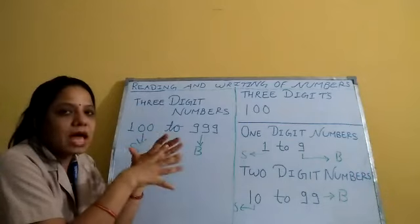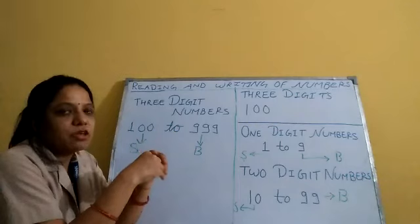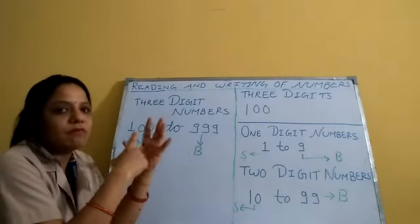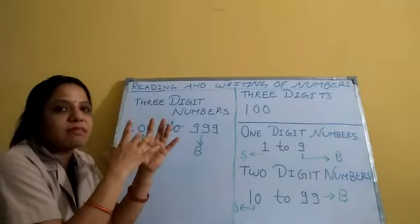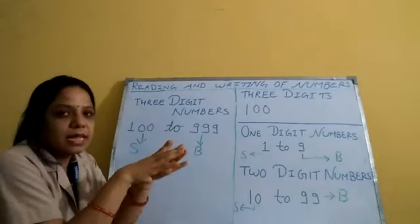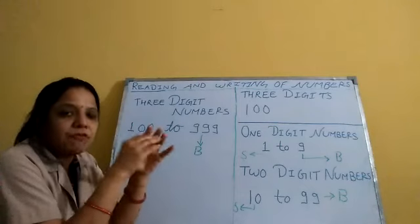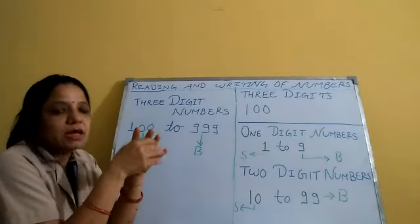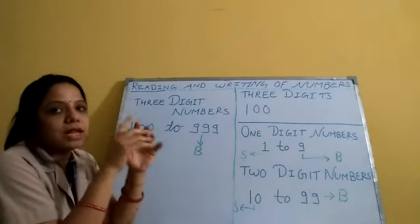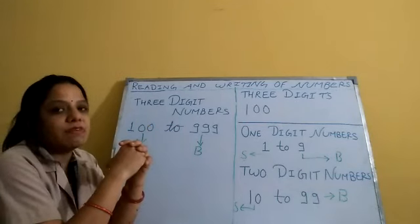Numbers are formed with the help of digits. In class second, you will write these basic digits: 0, 1, 2, 3, 4, 5, 6, 7, 8, 9. You will write these numbers in your practice copy daily with good handwriting. If you practice writing these numbers, your writing will be good. You have seen in this video how to write them in the box copy, so practice daily.